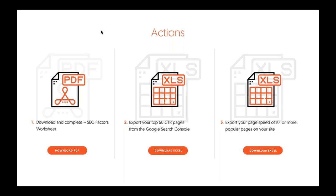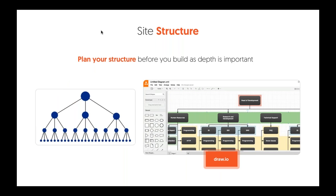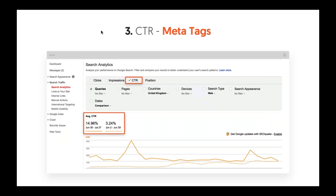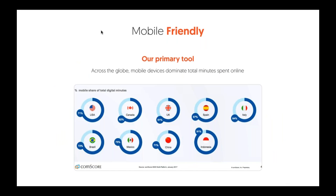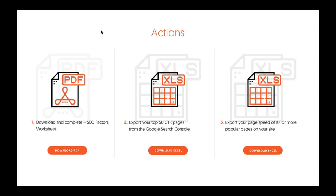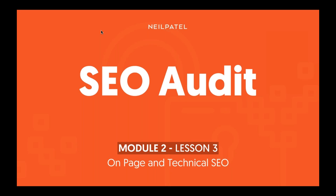So some action items for you. There's an SEO Factors worksheet — I want you to download all of that. Go to Google Search Console, log in, click Search Traffic, Search Analytics, and you will see your top 50 pages. Export this in an Excel sheet. Also go to Google Analytics and export your top most popular pages that load slow, look at page speeds, and work on fixing the slowest loading pages. Number three you get from Google Analytics, number two from Google Search Console, and number one from our console system.